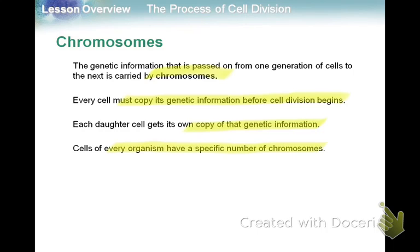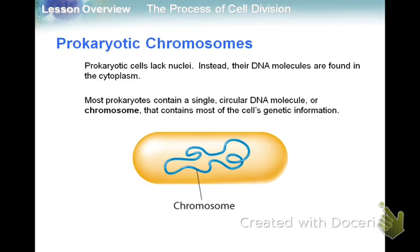Each organism has a specific number of chromosomes — whether it's bacterial cells that only have one chromosome, or humans that have 23 pairs, or 46 total chromosomes. There's everything in between. Prokaryotes, like bacteria, don't have a nucleus — prokaryotes have no nucleus. Their DNA molecules are just found floating around in the cytoplasm. Most prokaryotes only have one chromosome that contains most of the cell's genetic information.